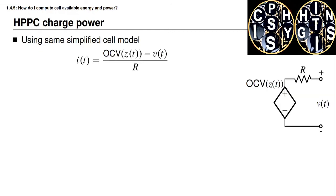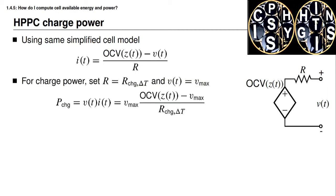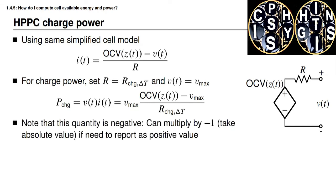To compute the amount of charge power available, we repeat the entire procedure using a different assumed terminal voltage and resistance. We use the same simplified cell model — current equals open circuit voltage minus terminal voltage all divided by resistance — but we replace the resistance with the tabulated charge resistance and set the terminal voltage equal to the maximum permitted voltage Vmax. We compute charge power as Vmax × (OCV − Vmax) / R_charge. Notice that this quantity is negative because open circuit voltage must always be less than the maximum voltage. So if we are required to report charge power as a positive number, we simply multiply this result by negative one.